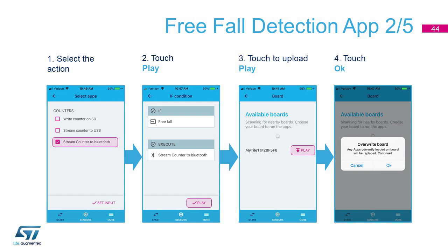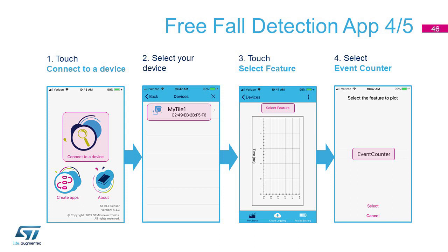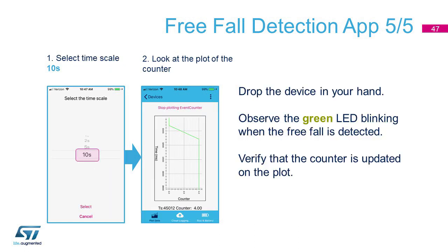Let's upload it to your box and connect to it after the upload finishes successfully. Selecting Event Counter inside the Select Feature field, with a timescale of 10 seconds, we can now try to drop the box in our hands and notice the green LED blinking and the counter graph on the phone incrementing.